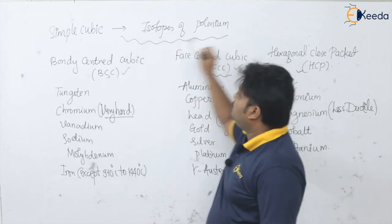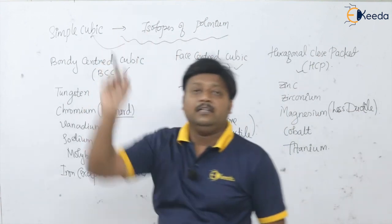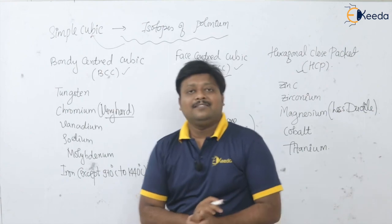In this way we can remember the crystal structures and their examples: BCC, FCC, HCP, and the isotopes of polonium for simple cubic. Thank you.